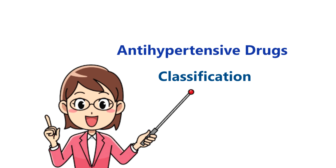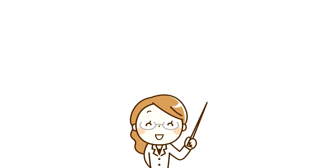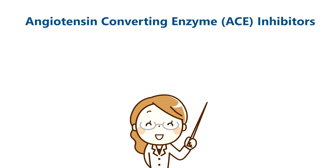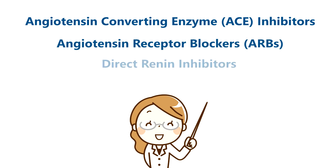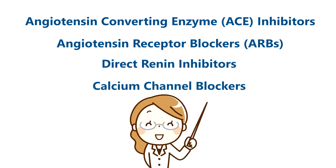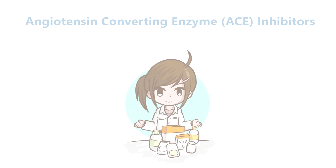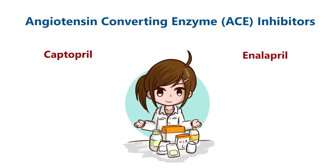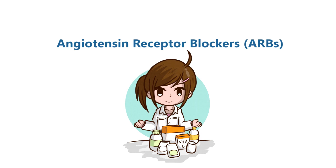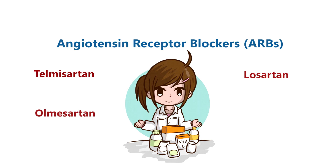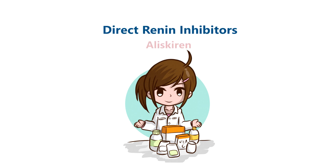Next, classification of anti-hypertensive drugs. Angiotensin receptor blockers include Telmisartan, Losartan, Olmesartan, etc. Direct Renin Inhibitors include Aliskiren.